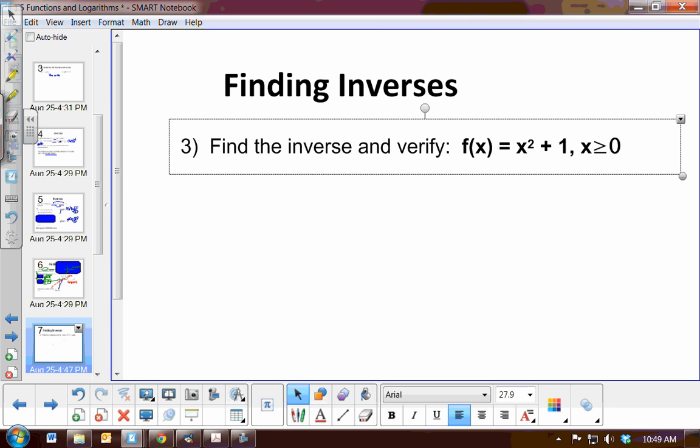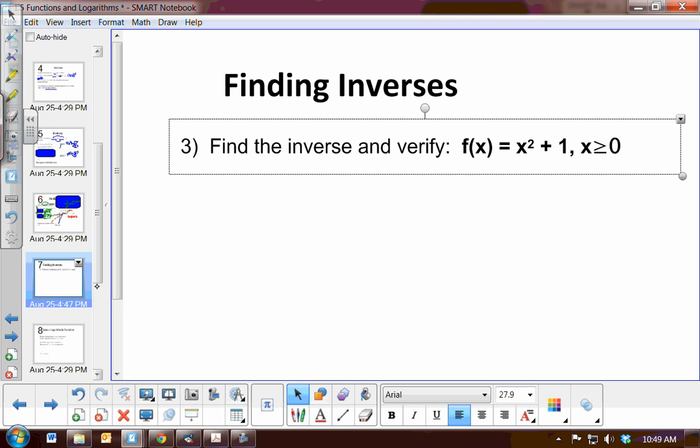Now, this is an example for you to do. This is example 3. You must find the inverse of the function x squared plus 1. And then you must verify that the function you find is the inverse. So I would like you to do a composition. So I would like you to do a composition of f of x and its inverse of x, and then its inverse and f of x. So pause the video and give yourself some time to work on that.